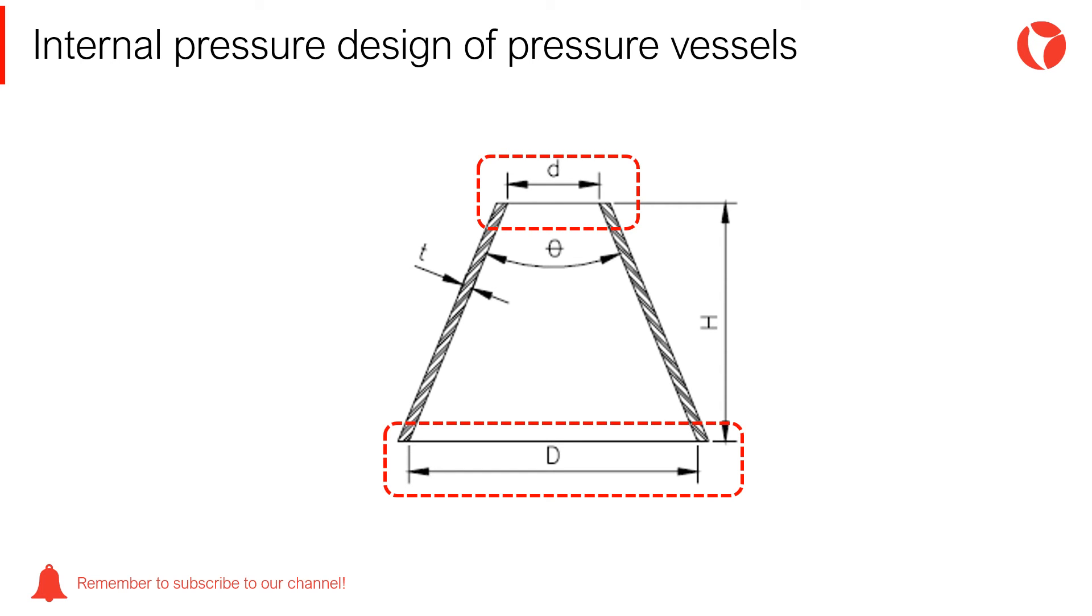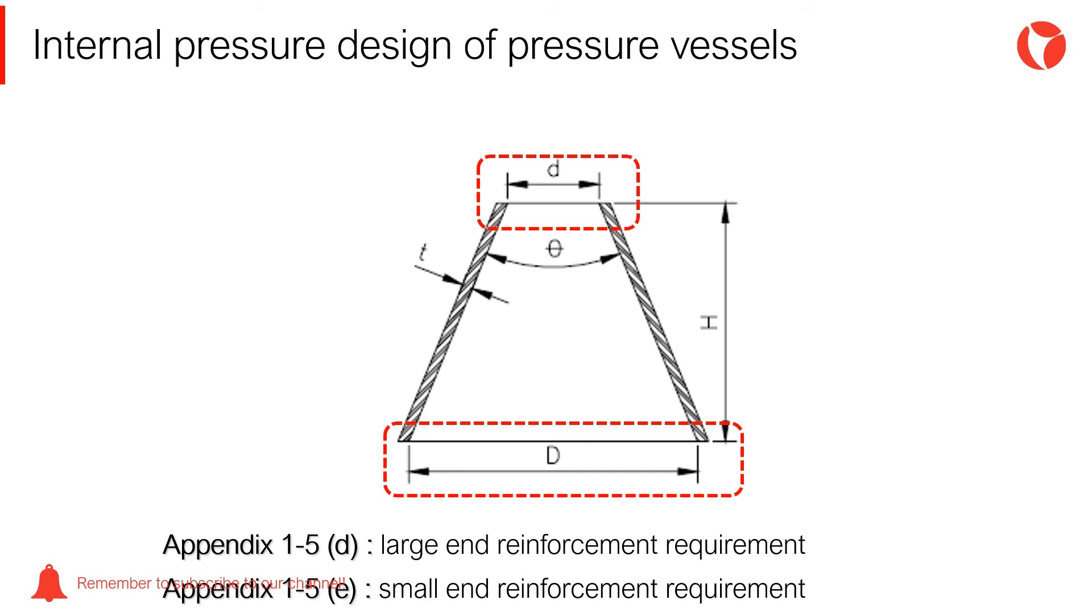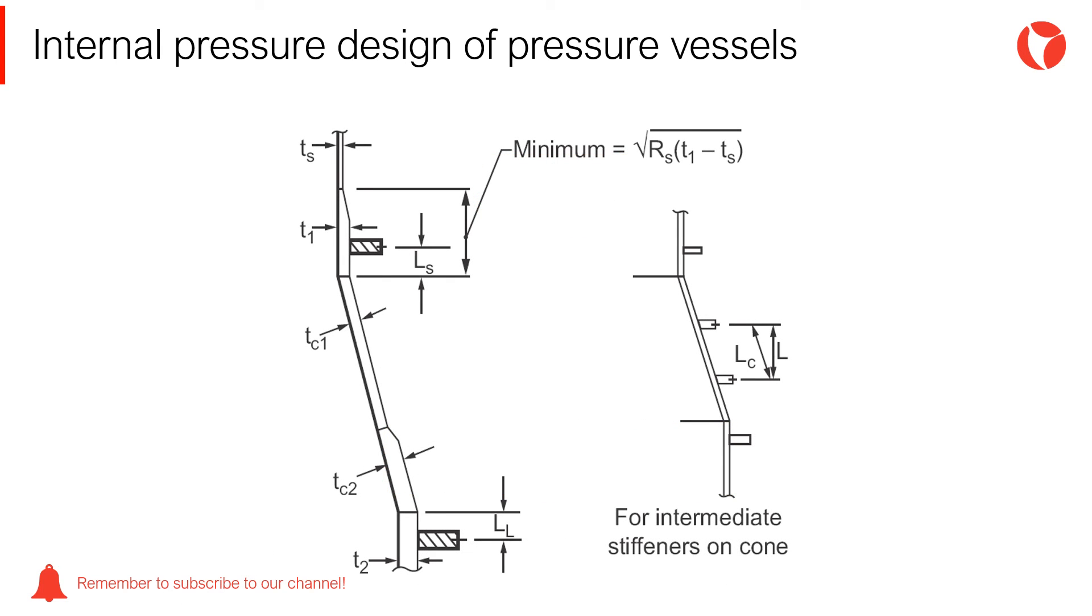Therefore, it is necessary to verify if reinforcements are required. The verification procedure is indicated in appendix 1.5 of the code. In order to reinforce the area, the moments of inertia must be increased, by increasing the thickness of the components, or by means of stiffening rings.